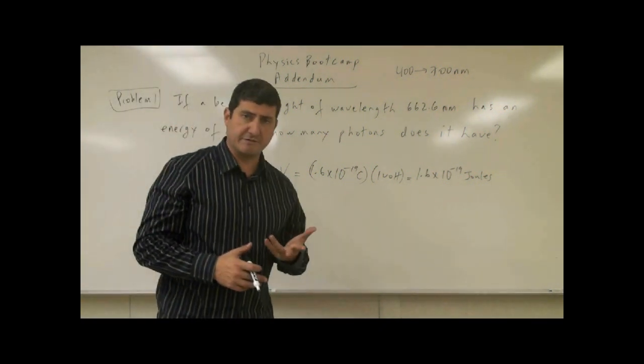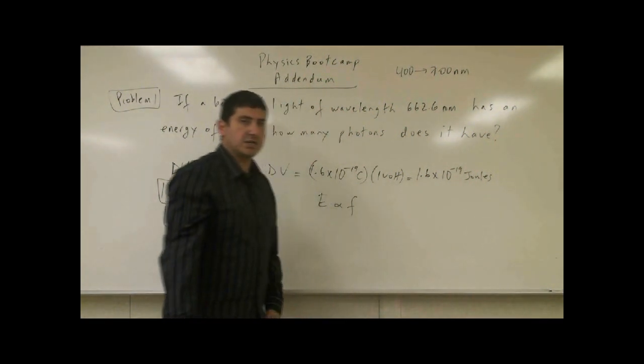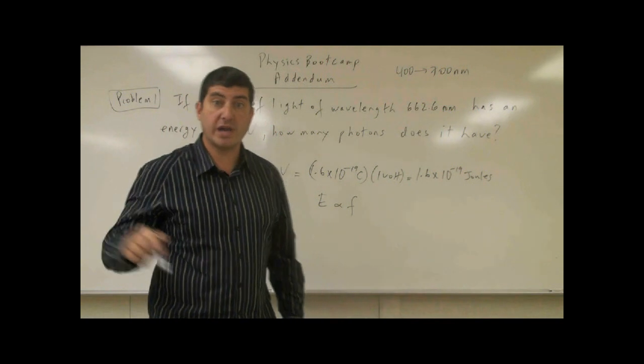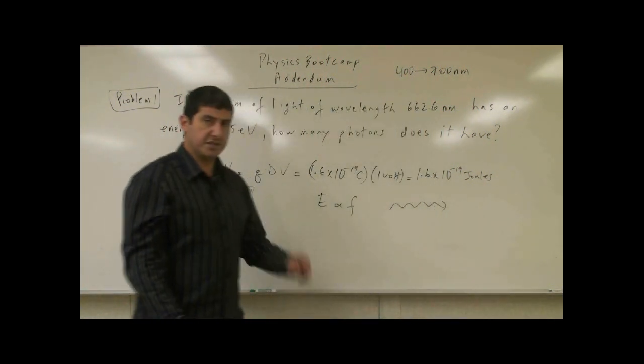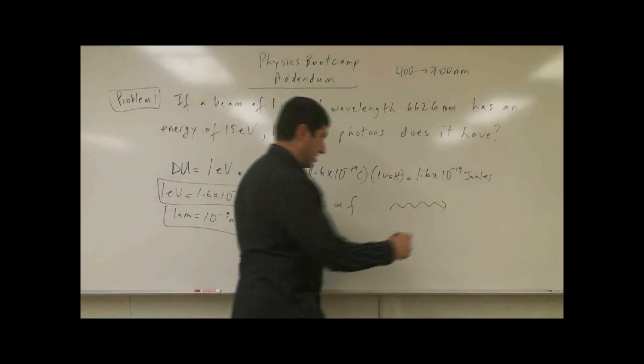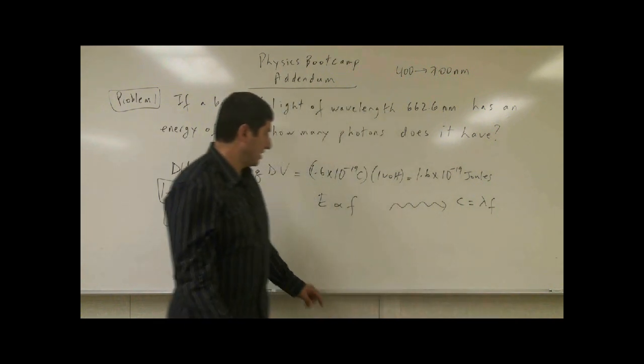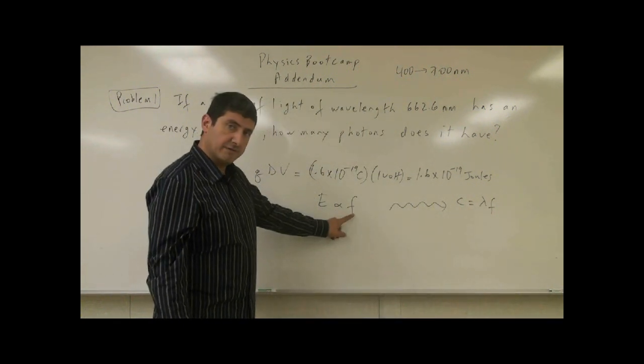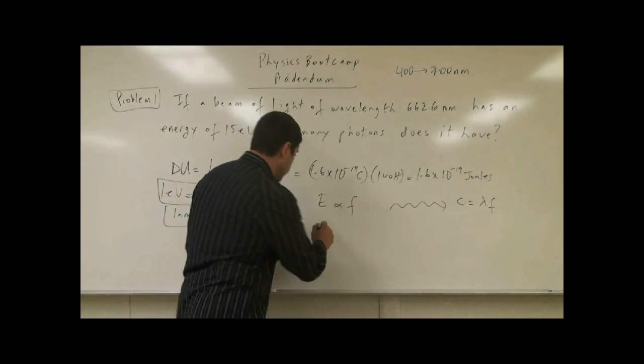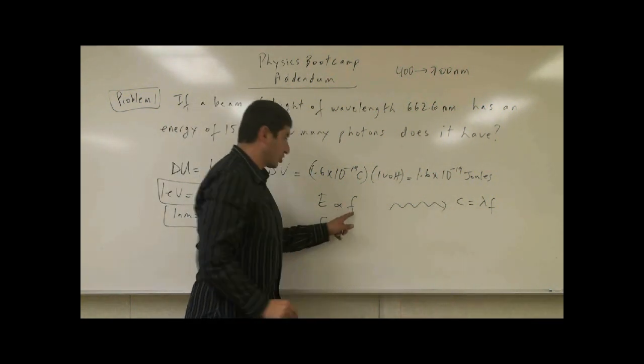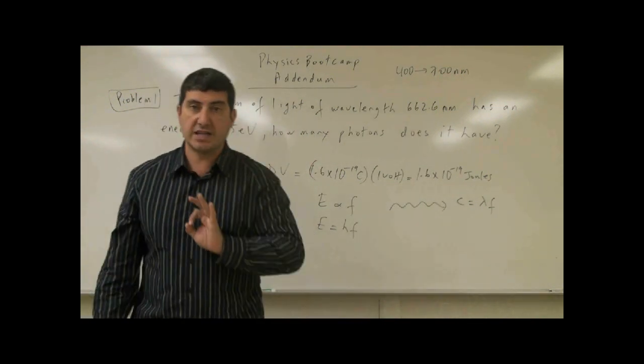Well, we use the equation from modern physics. The energy of a photon is proportional to the frequency of oscillation of the wave. So if you have a beam of light and it has a given frequency, we know that the speed of light is equal to the wavelength times the frequency, and the frequency of the wave is proportional to its energy. The higher the frequency, the higher the energy will be, and that constant of proportionality is called Planck's constant.